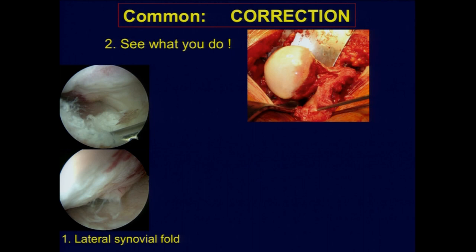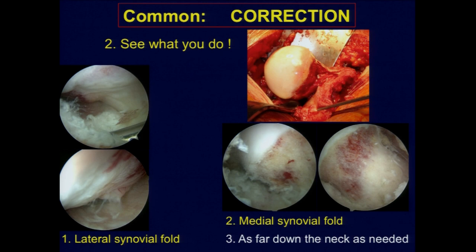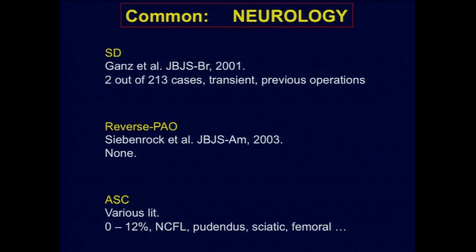In this case, there is the lateral synovial fold — this is seen from behind. You must see it, and with seeing you can correct the deformity adequately, going up to the plica or maybe over it. You have to go down to the medial synovial fold. If you don't see it, your correction will not be sufficient. These are many cases cited by open surgeons saying hip arthroscopy doesn't allow adequate treatment. So you need to see, and then you can correct. You need to go down the neck to correct sufficiently laterally.